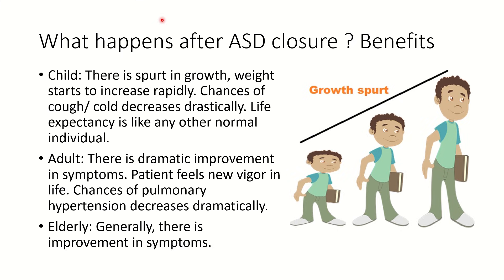What happens when ASD is closed? In kids, there is a spurt in growth — a baby who was not putting on weight for months will put on a couple of kilograms in the next 2 to 3 months after ASD closure. Cough and cold go down drastically. After ASD closure, life expectancy is like any other normal individual. In adults, there is improvement in symptoms and increase in vigor. The chances of pulmonary hypertension decrease. The earlier you close the ASD, the higher the chances that you will live a normal life without long-term complications.